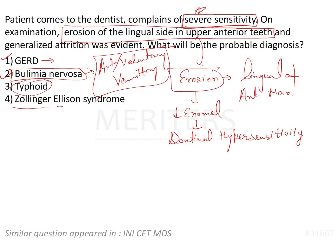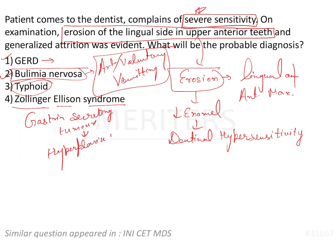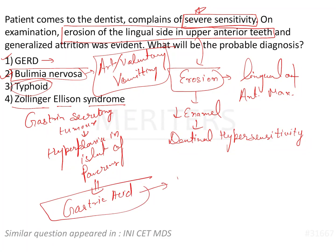Then we have another syndrome known as Zollinger-Ellison syndrome, which is a condition in which a gastrin-secreting tumor, or hyperplasia or hypertrophy in the islet cells of the pancreas, causes overproduction of gastric acid. This gastric acid, when overproduced, causes peptic ulcers — ulcers in the mucosa of the stomach.